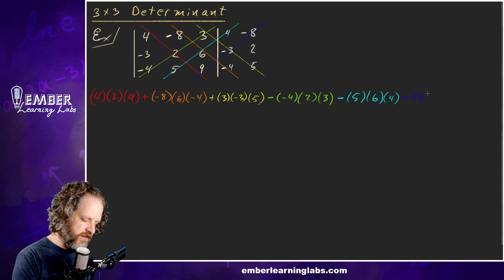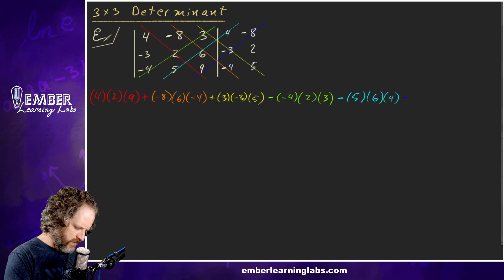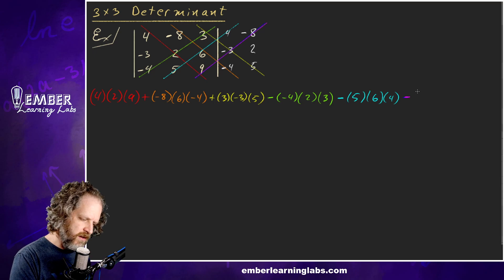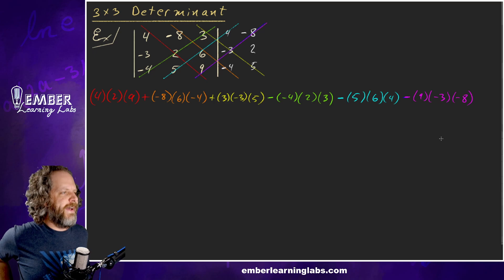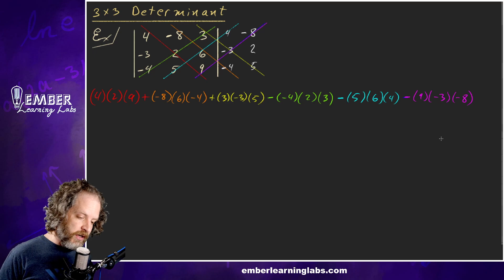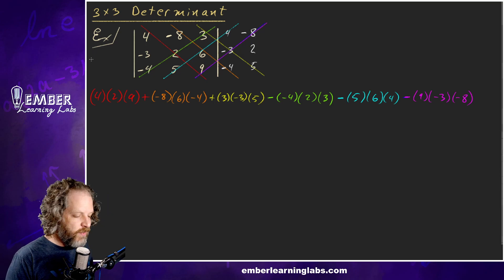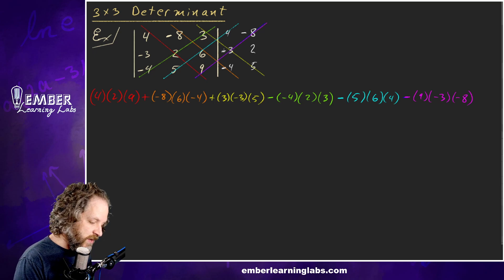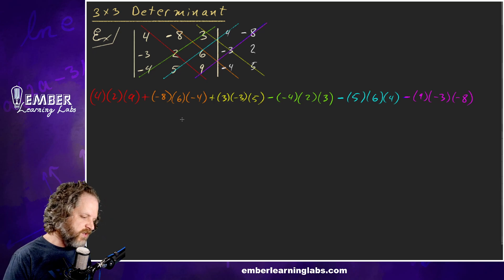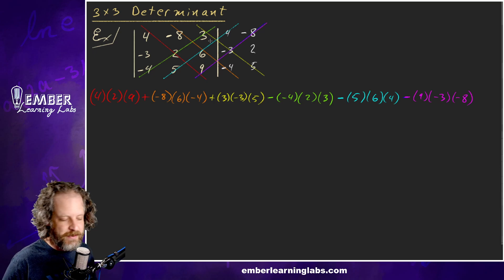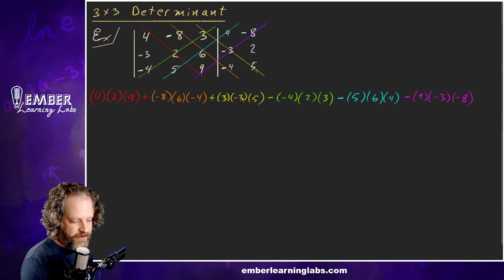And then minus 9 times negative 3 times negative 8 for the last diagonal. You may be tempted to say we didn't use some numbers — but we actually did, because values like negative 3 and 2 get used through the rewritten columns. So we add the down diagonals and subtract the going-up diagonals.